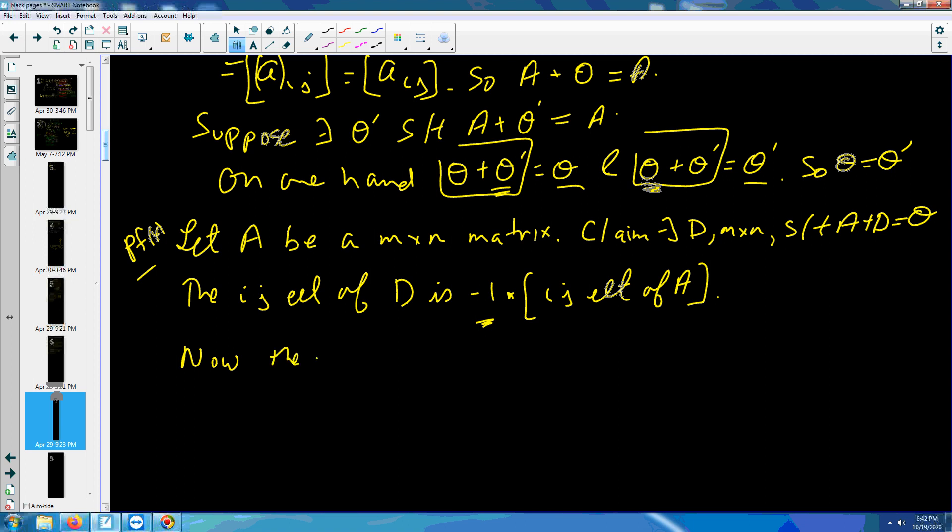Now, the ij element of A plus D is going to be A plus D ij. But that's going to be A ij plus negative A ij, by definition of D. But that equals to zero ij. That is, the ij element of A plus D will be zero for every ij. Hence, A plus D is equal to this zero matrix.